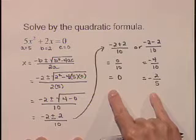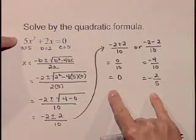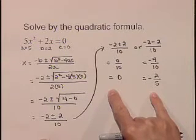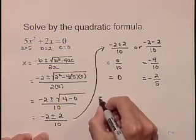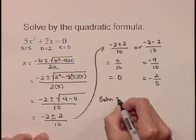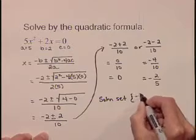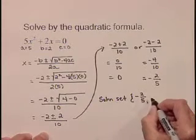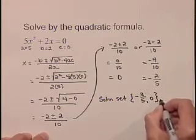So, we have two solutions to this equation, 5x squared plus 2x equals 0, creating a solution set consisting of negative 2 fifths and 0.